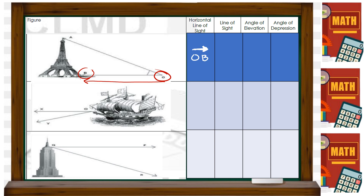The horizontal line of sight is ray OD. Just to clarify — although the term is 'line of sight,' the symbol we use is a ray since angles are composed of rays. The line of sight going upward is ray OA. The horizontal line is fixed — it's not moving. The line of sight is either going up or going below. In this case, it's going above, so this is an angle of elevation. The angle of elevation is angle AOB, and there's no angle of depression.